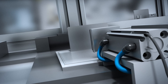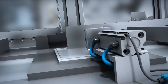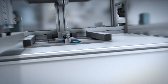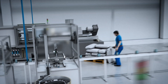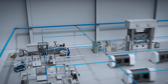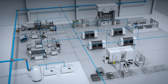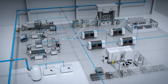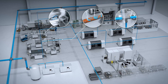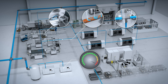In factory automation, compressed air is the most expensive form of energy. Energy efficiency and energy transparency are therefore playing an increasingly important role. Track down leaks in the compressed air system and uncover savings potentials.